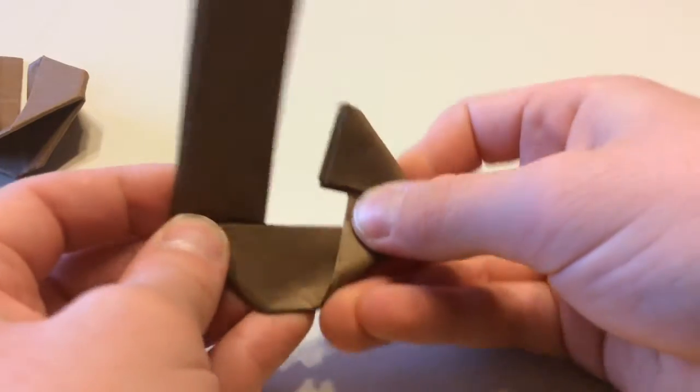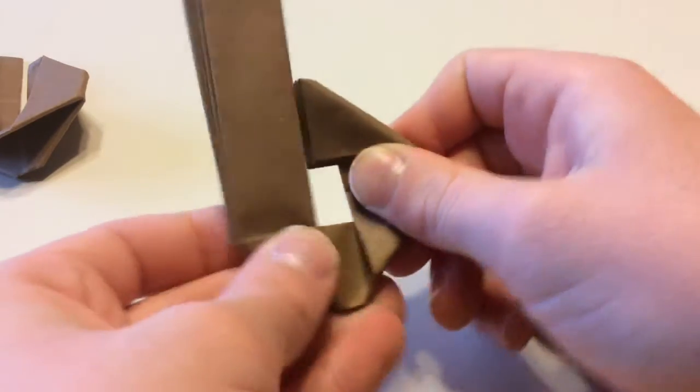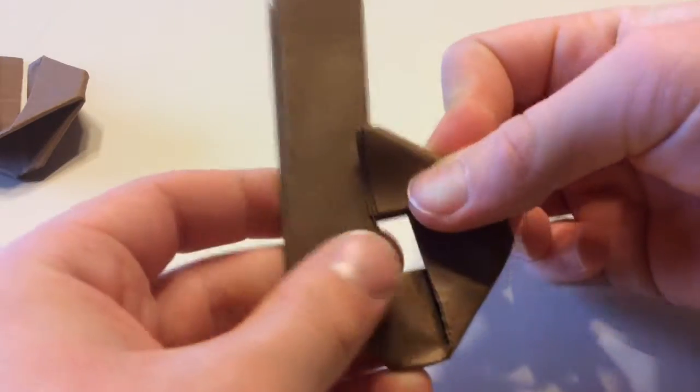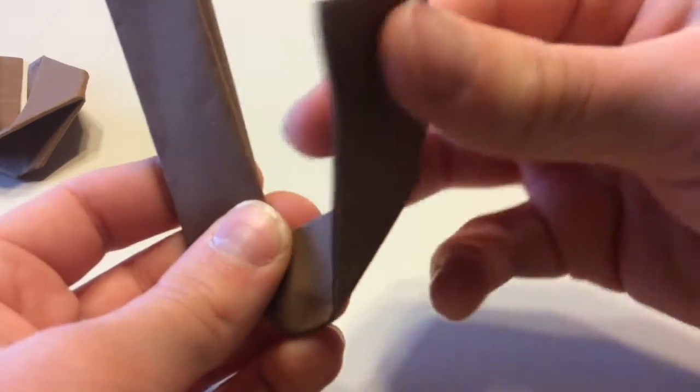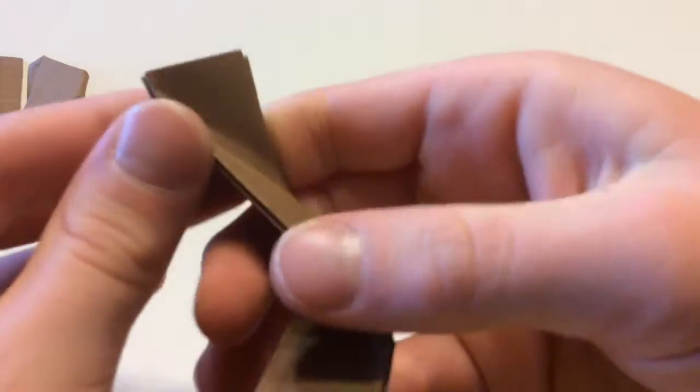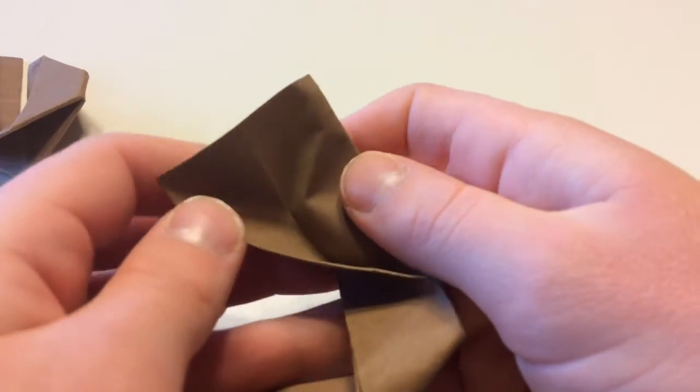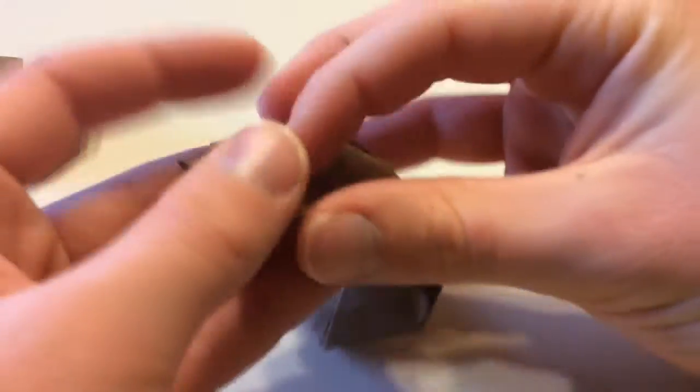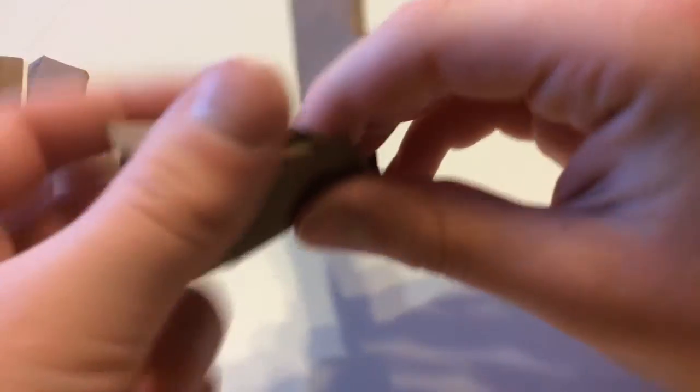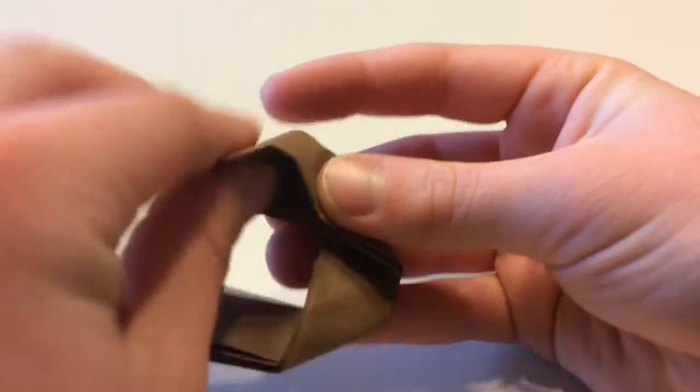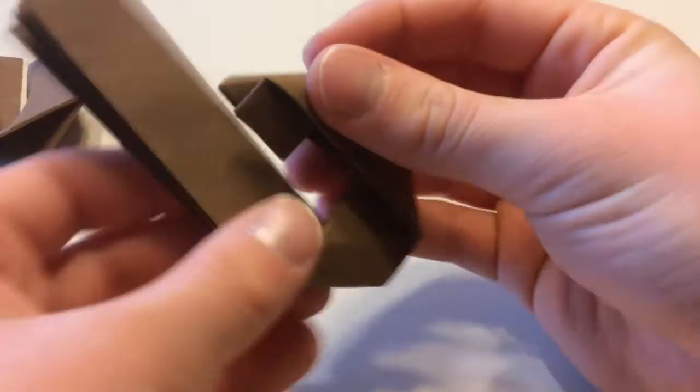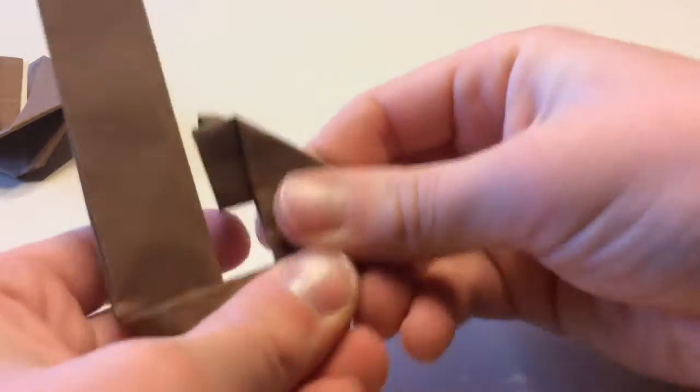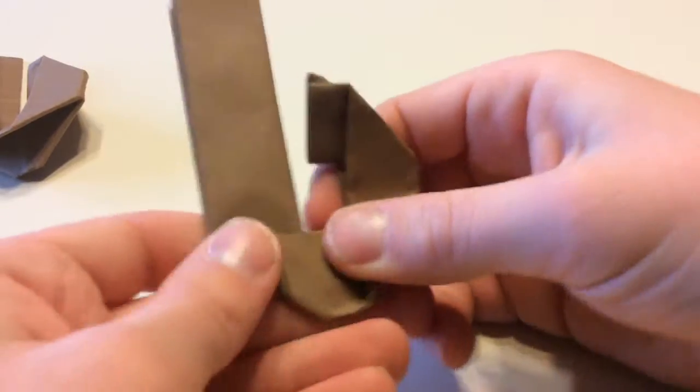So, to make it look more clean, we are going to make some reverse folds. So, unfold this. Unfold this, open it up, and fold it. And we're just pushing it down. So, just about here. And we have reversed it.